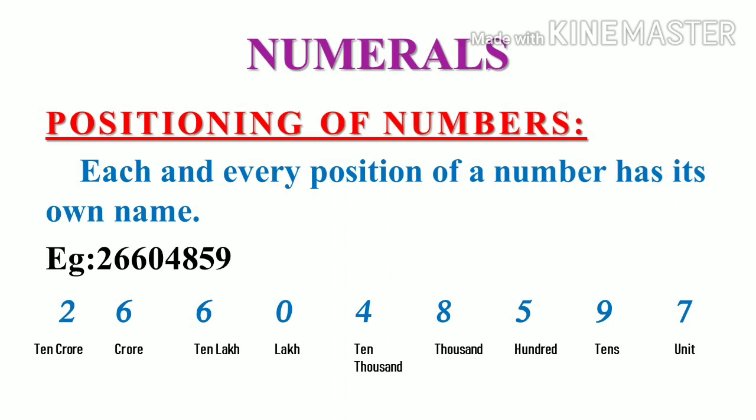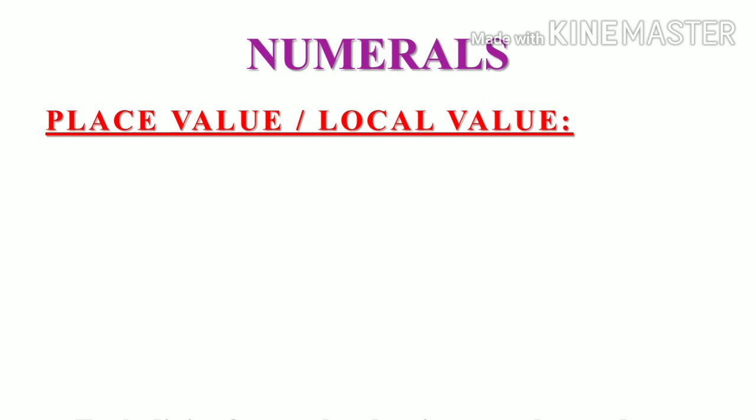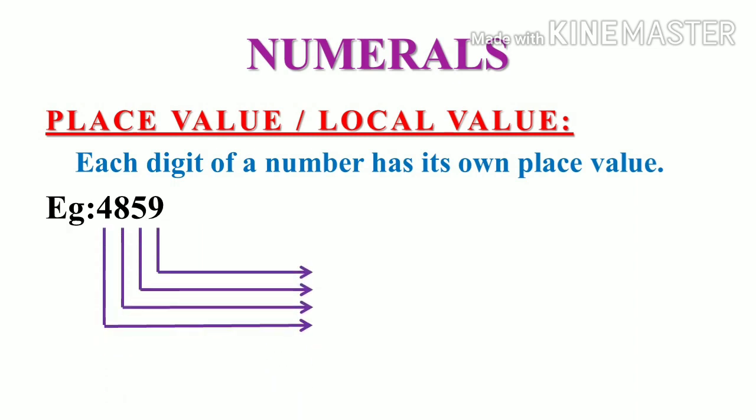As a next thing, we are going to see place value or local value. Place value or local value of a digit varies according to the value of it and also according to the position in which the digit is being placed. Here, we are going to see an example: 4, 8, 5, 9. Nine is placed in units place, five in tens place, eight in hundreds place, and four in thousands place. We are going to calculate the place value or local value of each and every digit placed here.